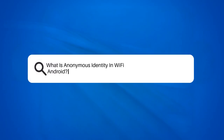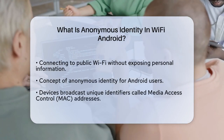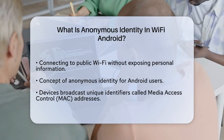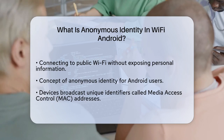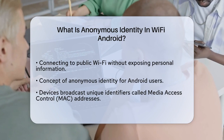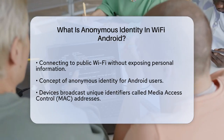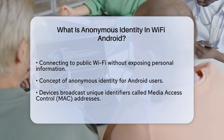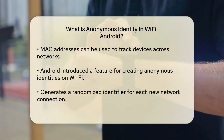What is anonymous identity in Wi-Fi Android? Imagine connecting to a public Wi-Fi network without worrying about your personal information being exposed. This is where the concept of anonymous identity comes into play, especially for users of Android devices. When you connect to Wi-Fi, your device typically broadcasts its unique identifier, known as the media access control address. This identifier can be used to track your device across different networks, potentially compromising your privacy.